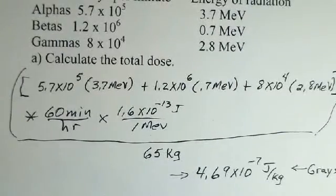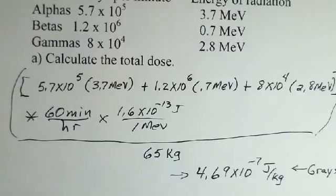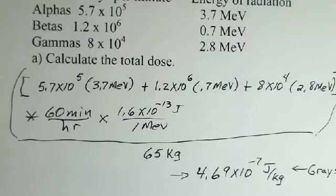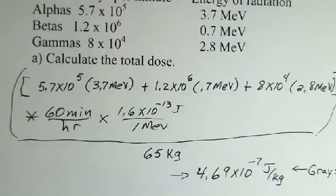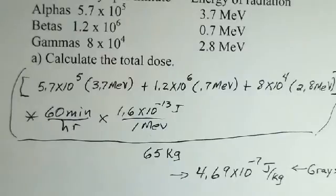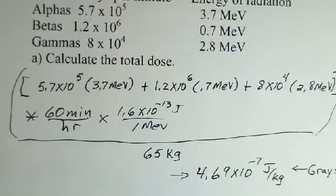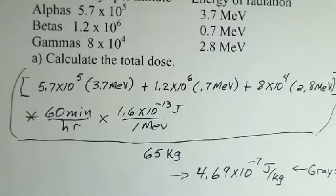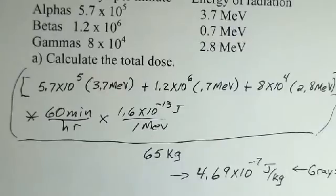So that's 4.69×10⁻⁷ grays — since 1 gray equals 1 joule per kilogram — and that's the absorbed dose. Now for the effective dose, we use RBE values: alphas have an RBE of 15 since they're more biologically effective, betas have an RBE of 1, and gammas have an RBE of 1. We redo the calculation: 5.7×10⁵ decays/min × 3.7 MeV × RBE of 15 for the alphas; 1.2×10⁶ × 0.7 MeV × 1 for the betas; and 8×10⁴ × 2.8 MeV × 1 for the gammas.